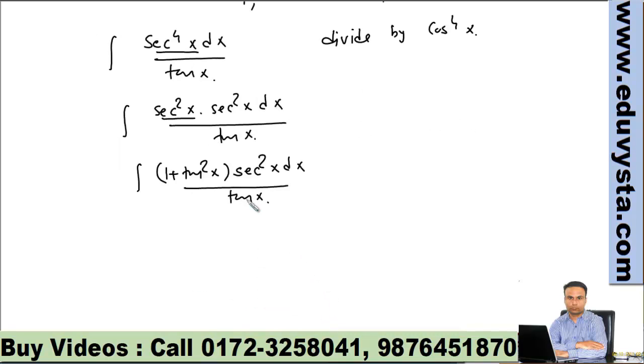Now substitute tan x is equal to t. Then we have 1 plus t squared upon t. And what will be sec squared x dx? That will be dt. So now we have to integrate 1 upon t plus t.